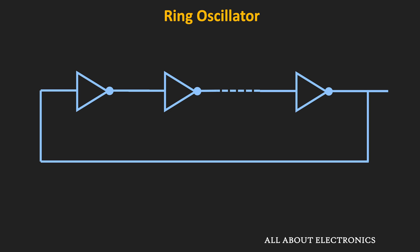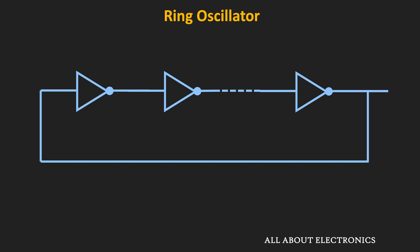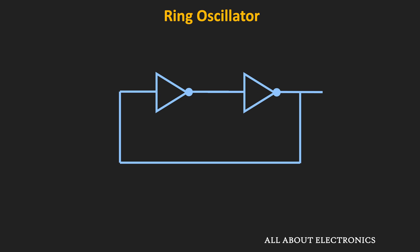In this configuration, if the number of inverters in the chain is even, then this circuit won't work. For this circuit to work as an oscillator, the number of inverters in the chain should be odd. Let us understand this with an example. Let's say two inverters are connected in the chain, and the output of the second inverter is connected back to the input side.